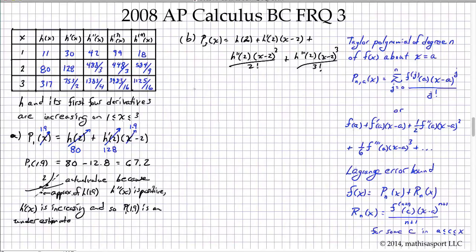And so let's put in values that they've given us. P3 at 1.9 is going to be h of 2 we said was 80 plus h prime at 2 is 128. Our x minus 2 values are all going to come out to negative 0.1. And h double prime of 2 is 488 over 3 times x minus 2, in this case 1.9 minus 2, negative 0.1 squared over 2 factorial, which is just 2. And our last term 448 over 3 times negative 0.1 cubed over 3 factorial, which is 6.